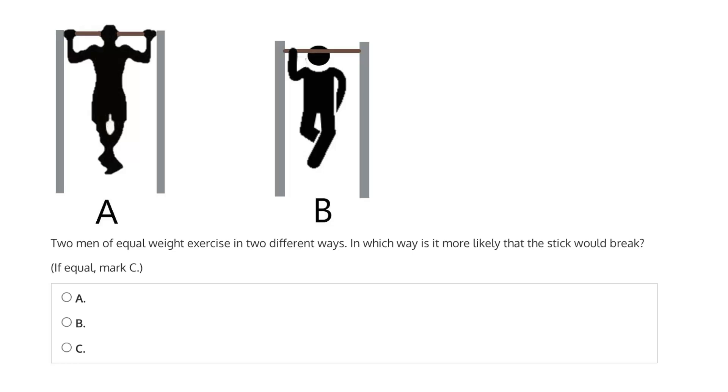This question says, two men of equal weight exercise in two different ways. In which way is it more likely that the stick would break? Is it A, where the first man is using two hands to support his weight? Is it B, where the second man is using only one hand to support his weight? Or is it C, are they equally likely to break the stick?